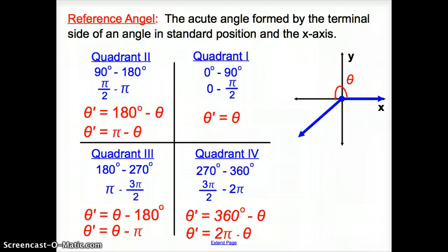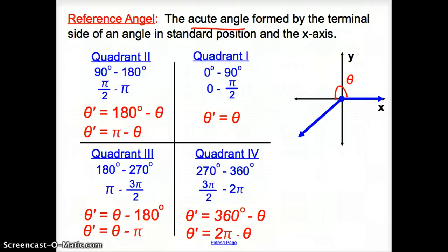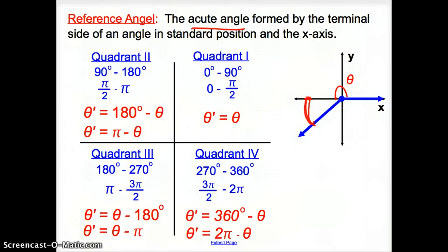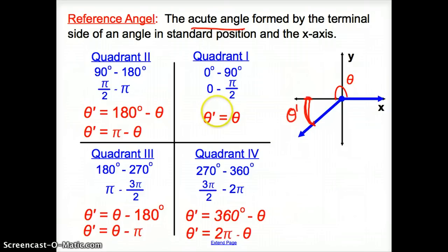Next, we have a reference angle. A reference angle is the acute angle formed by the terminal side of an angle in standard position and the X-axis. So if here is our angle, our reference angle would be from the axis to the terminal side of the angle. We call that theta prime — theta with a little apostrophe.